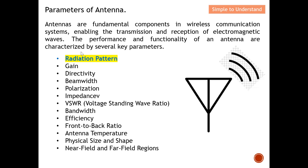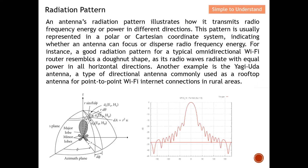The performance and functionality of an antenna are characterized by several key parameters. For this video, I mainly focus on radiation pattern. An antenna radiation pattern illustrates how it transmits radio frequency energy or power in different directions — indicating whether the antenna releases RF energy to a specific direction or equally in all areas.